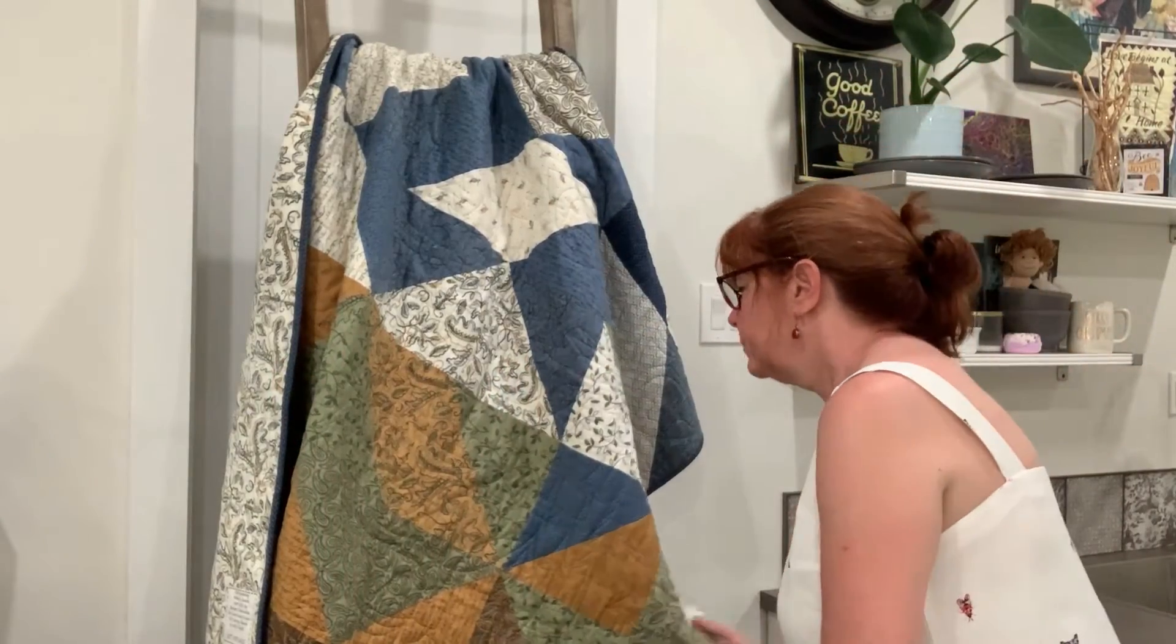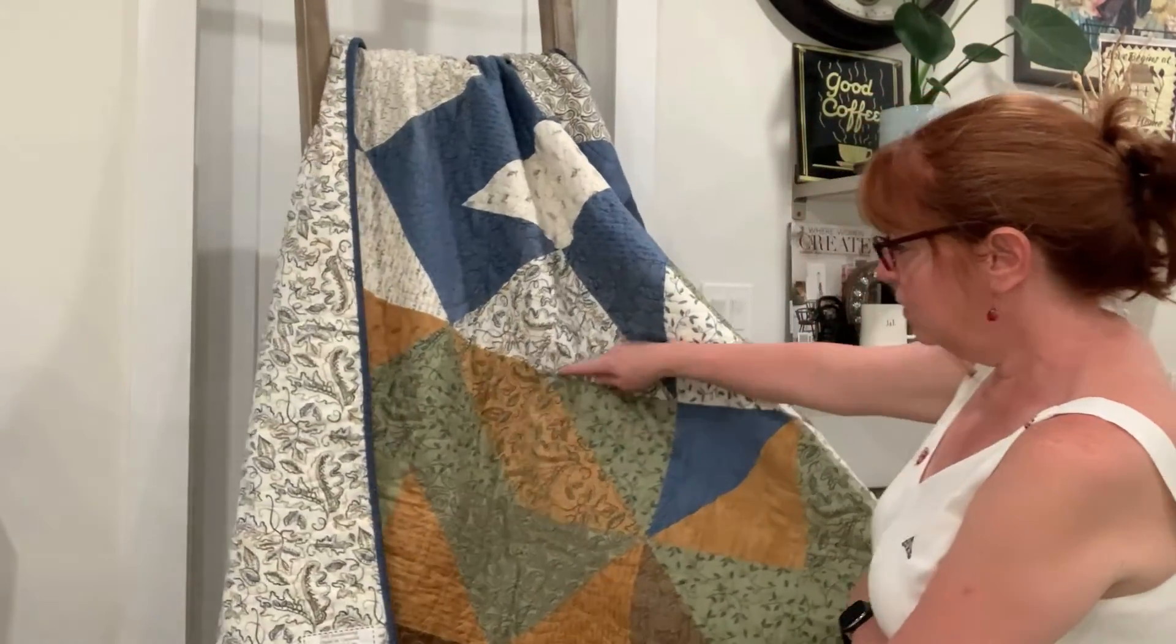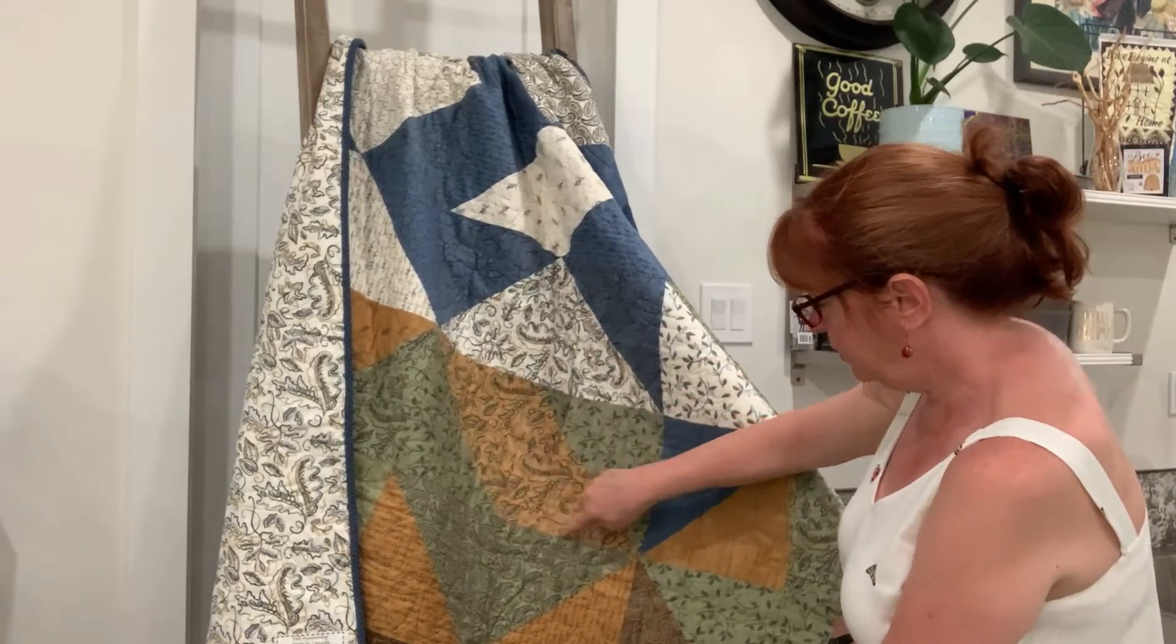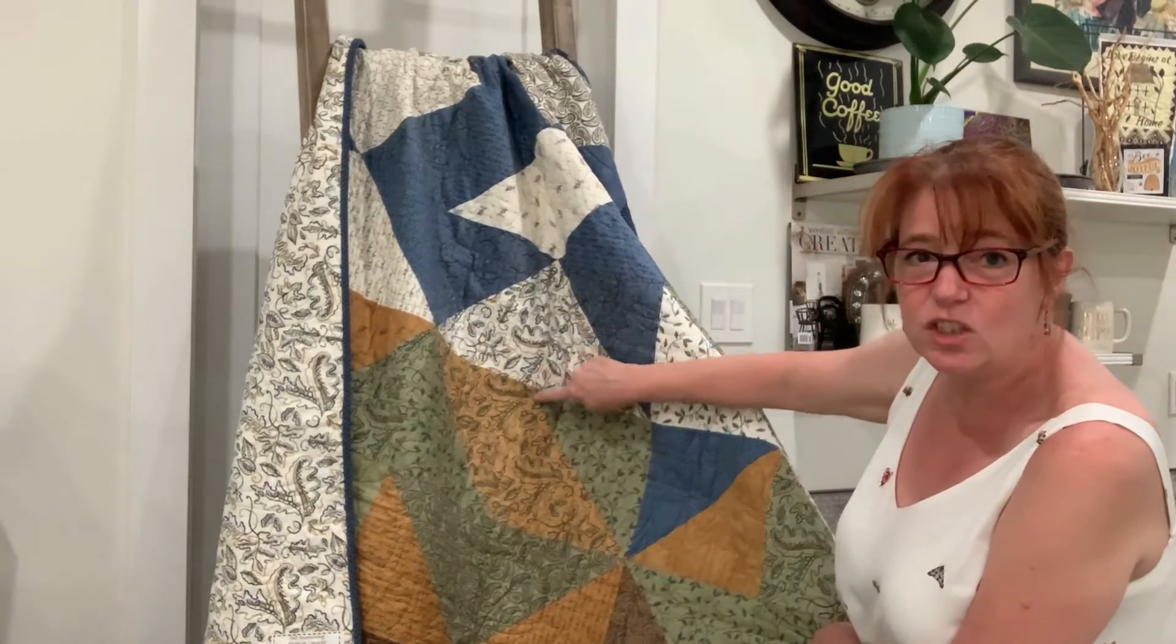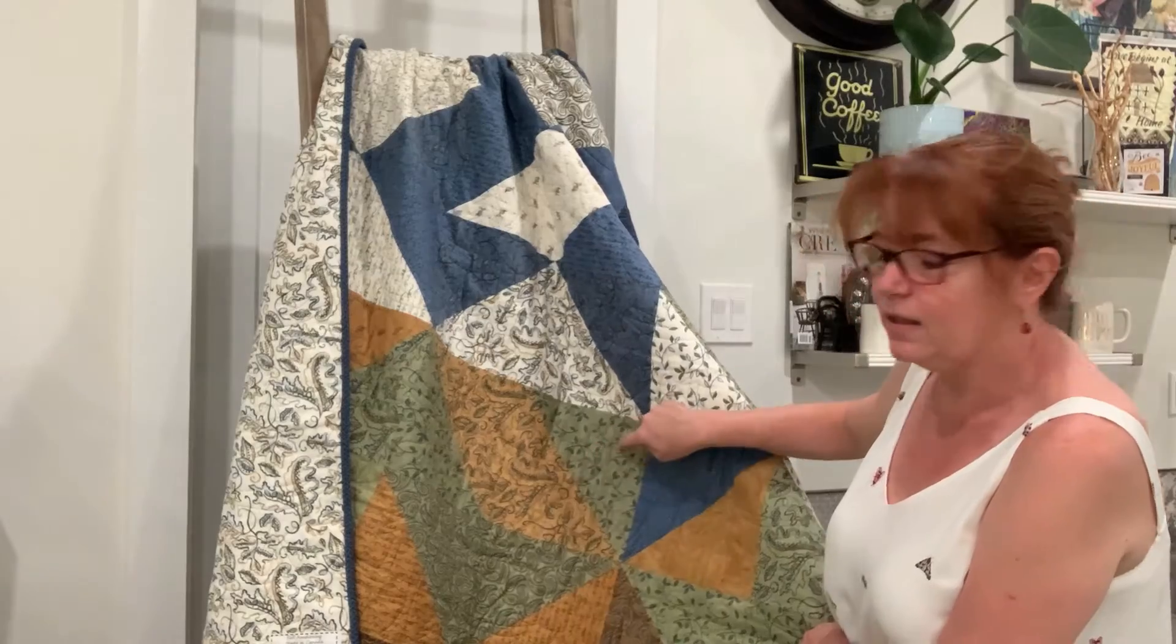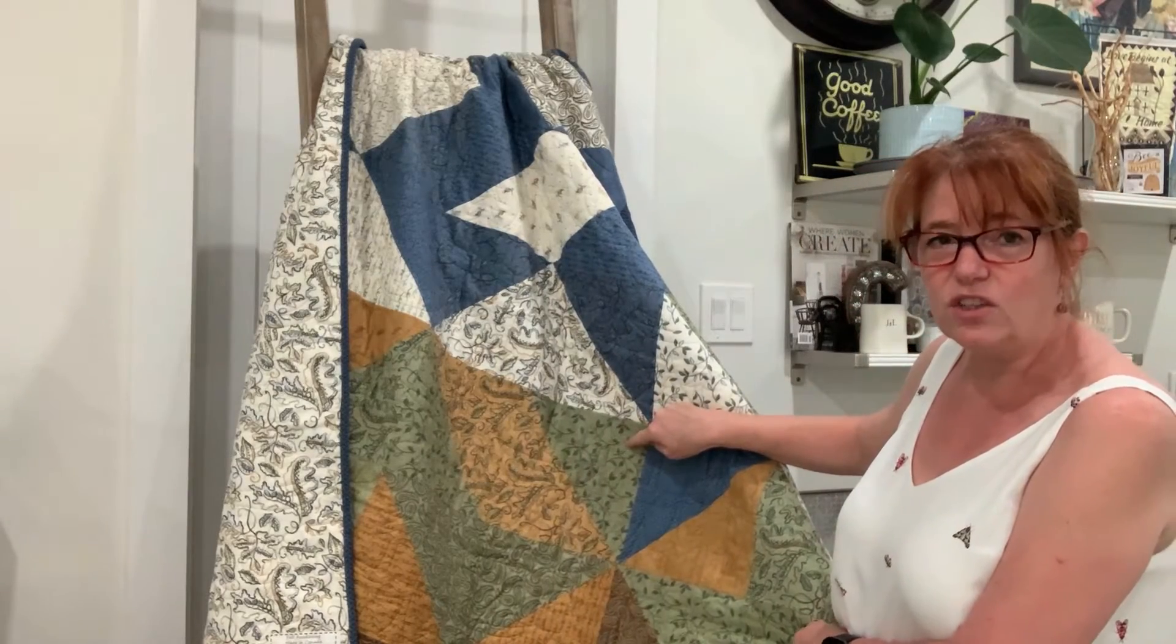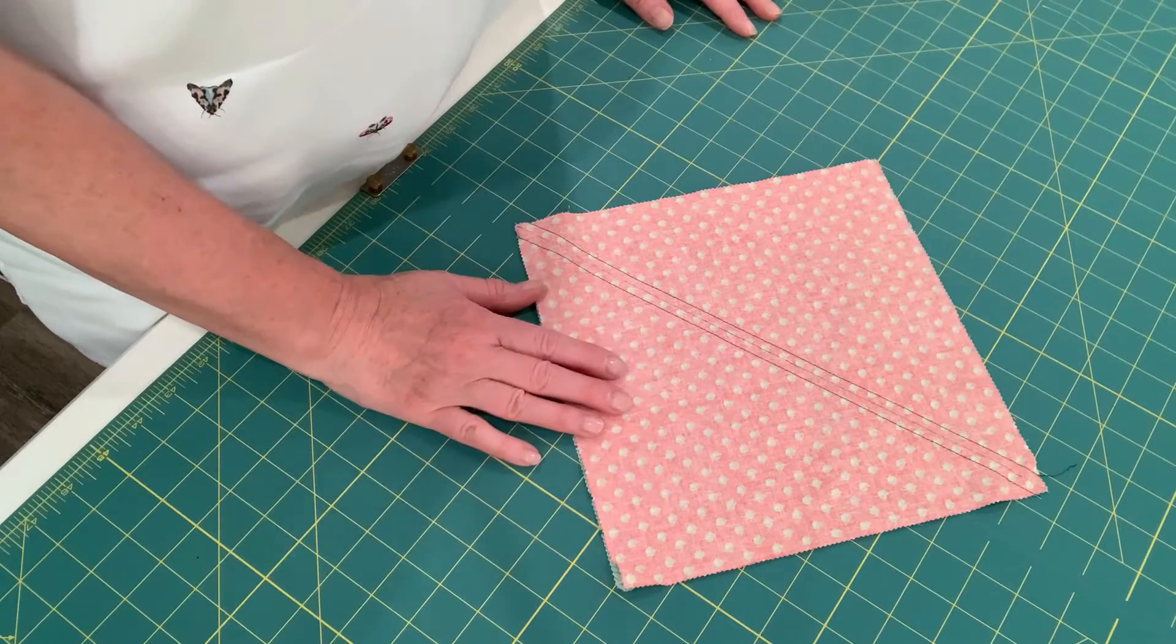I have behind me my Fall Awakening quilt, and here is a square that is divided into two with a triangle on either side, and that's called a triangle square.